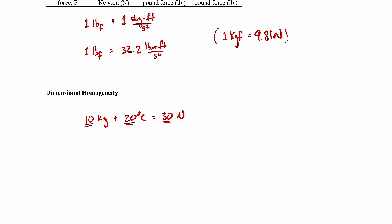All the units have to match. You can only add kilograms to kilograms. You can only add degrees Celsius to degrees Celsius, newtons to newtons. So this equation would be wrong because the units don't work out. It's not dimensionally homogeneous.